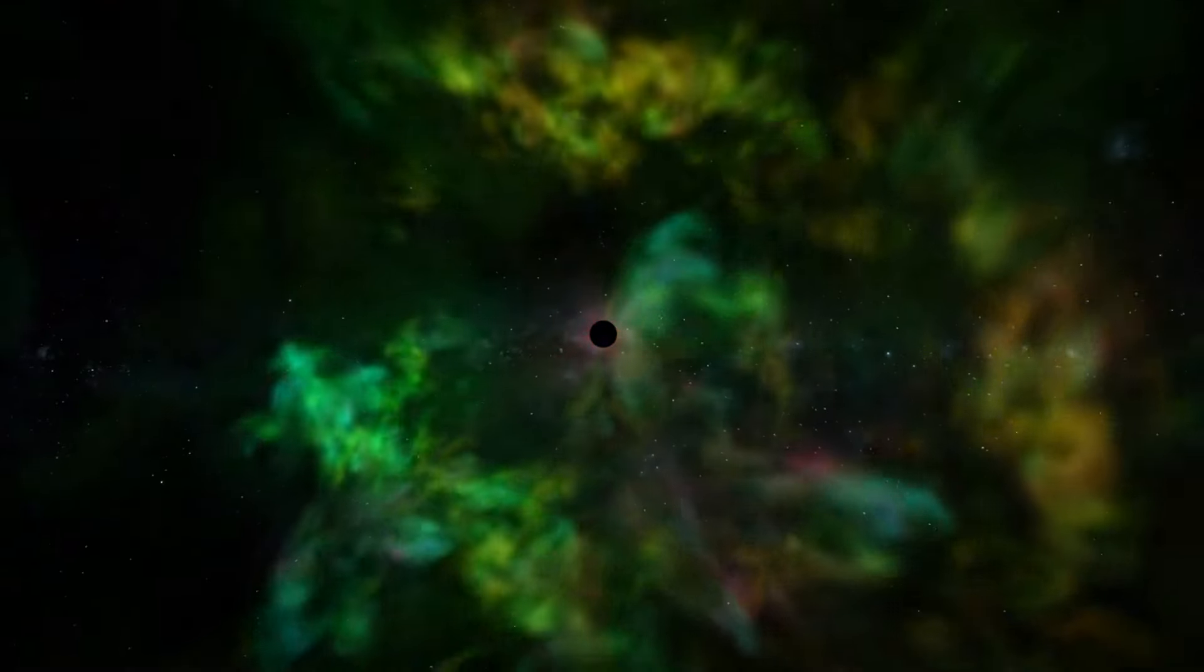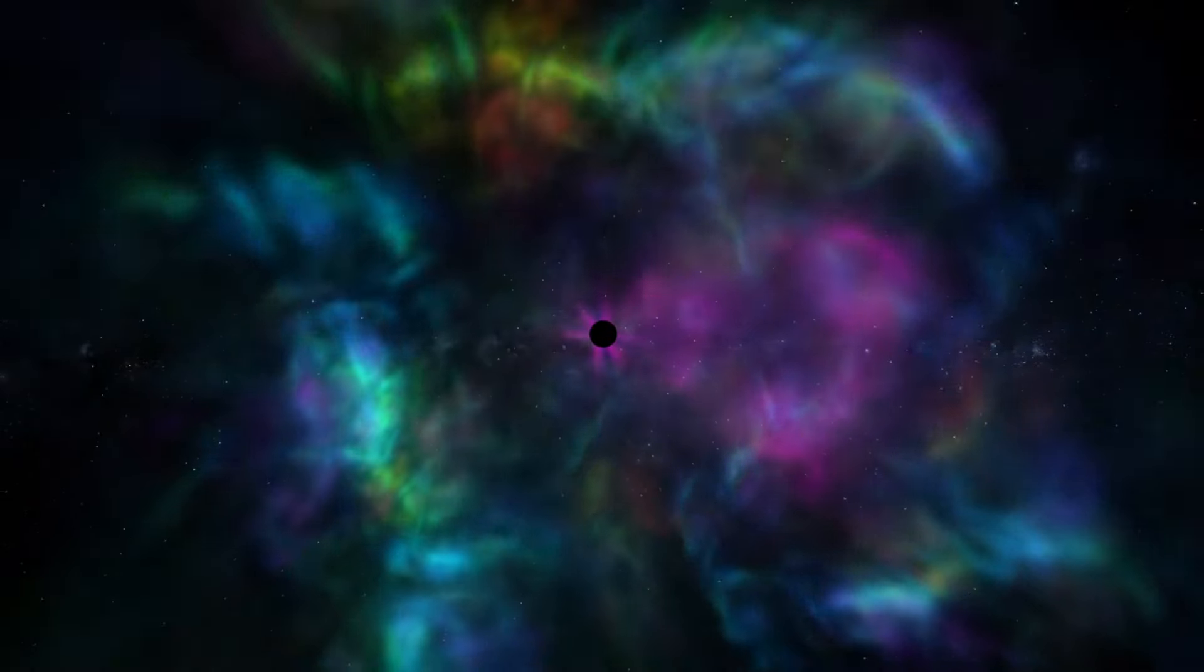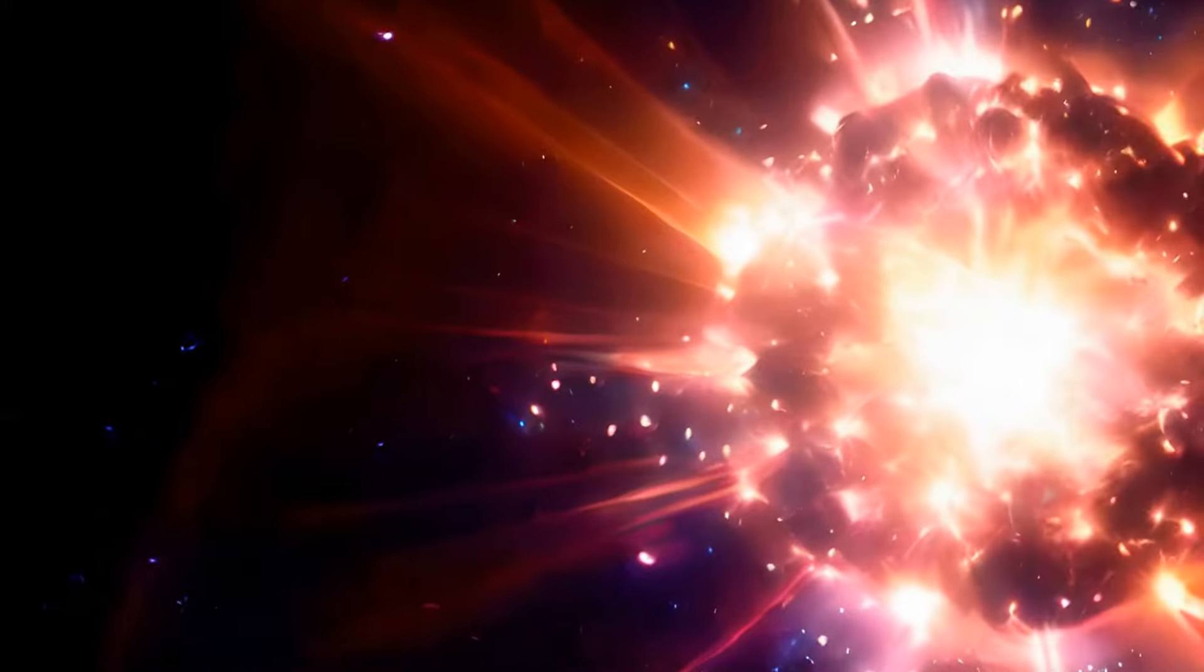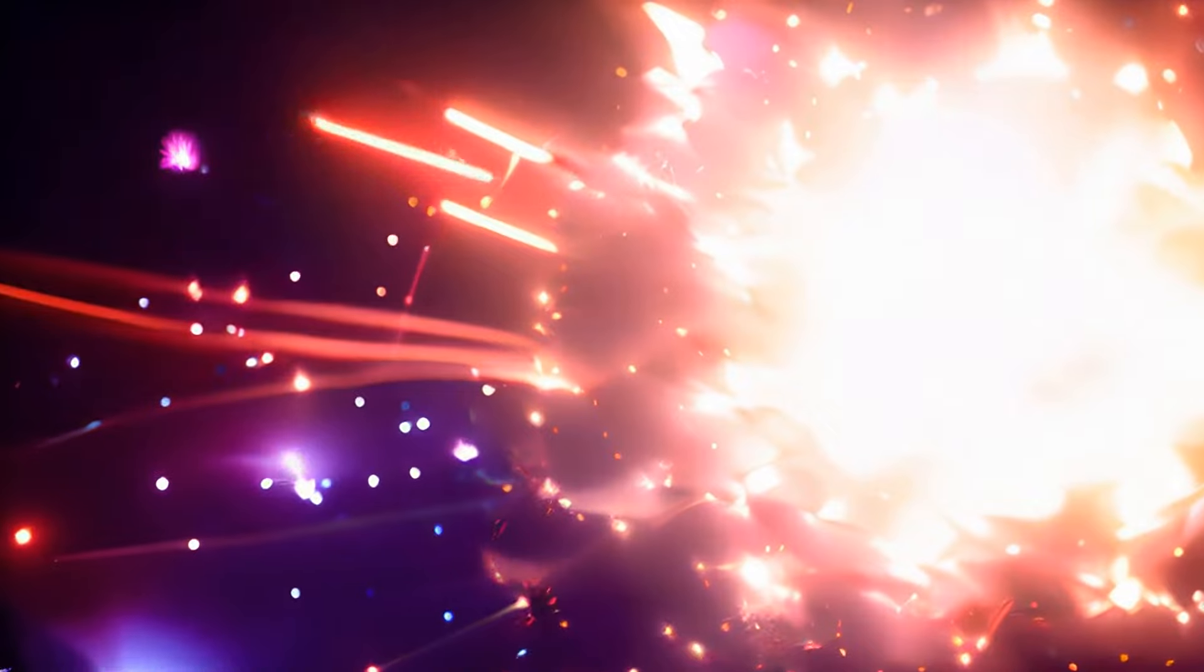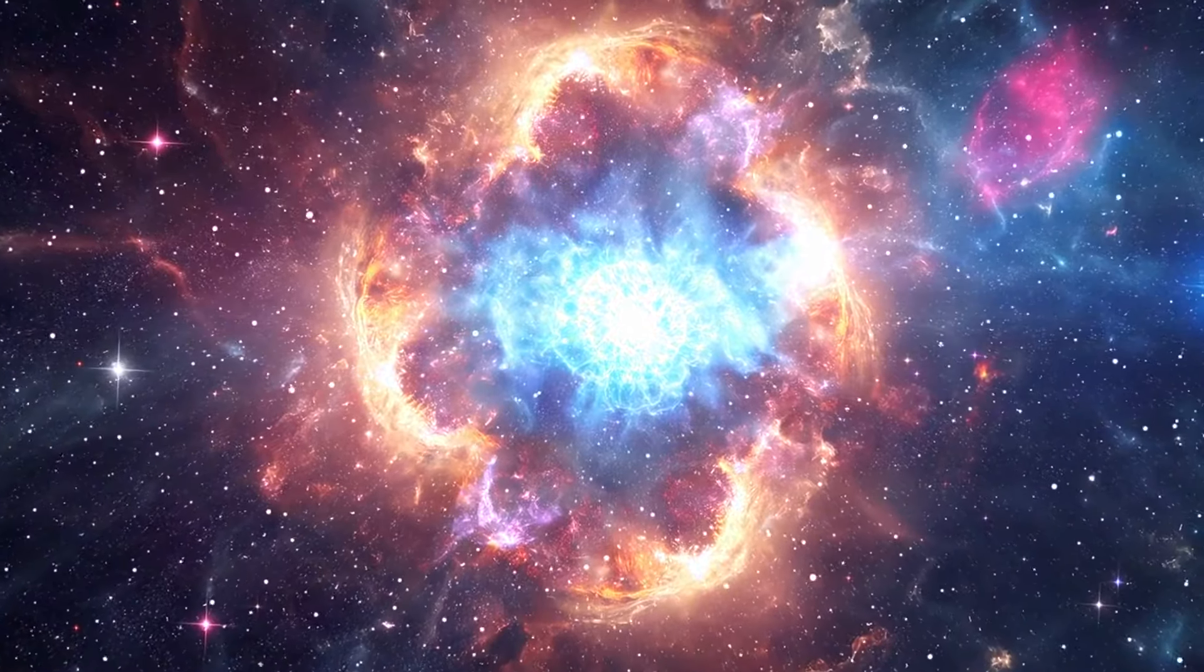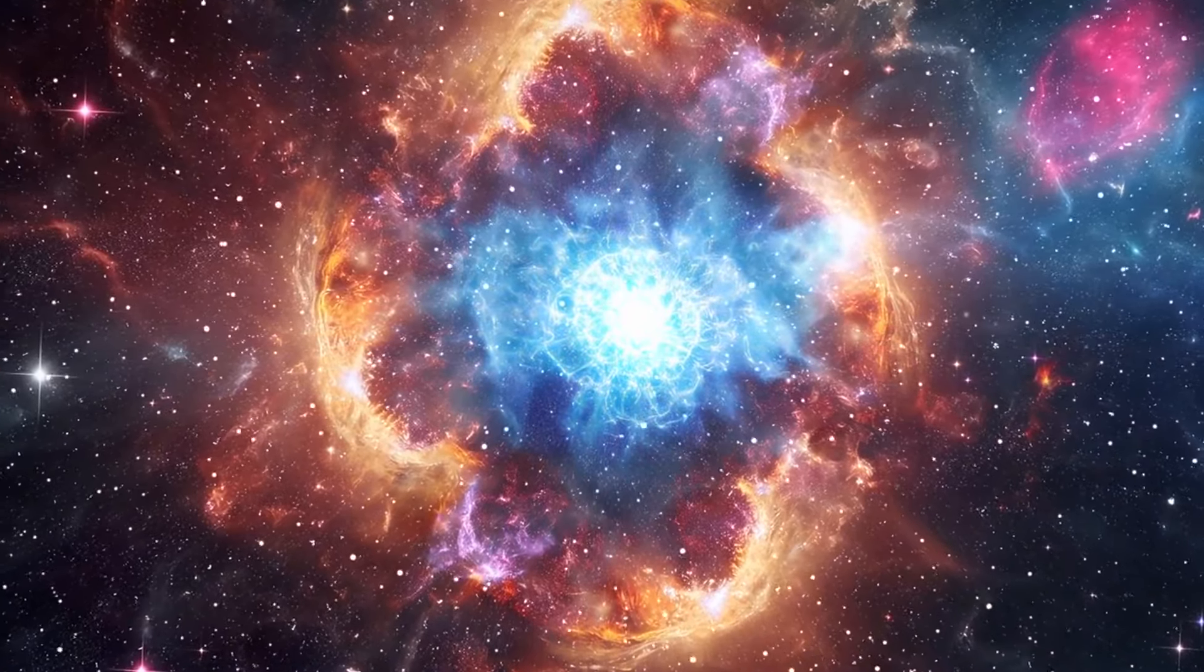A supernova as close as Betelgeuse would provide an extraordinary opportunity to study this phenomenon in unprecedented detail. By precisely measuring the light curves, the change in brightness over time, and spectra, the distribution of light across different wavelengths of the Betelgeuse supernova, scientists could gain valuable insights into the mechanics of supernova explosions and the behavior of dark energy. The proximity would allow for more accurate distance measurements, reducing the uncertainties that plague observations of more distant supernovae. This could help refine the models used to describe the expansion of the universe and improve our understanding of how dark energy influences this process.